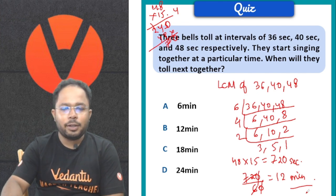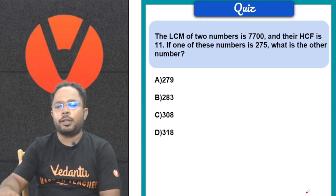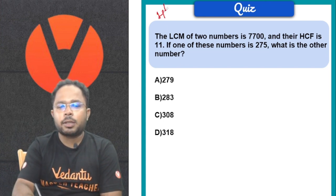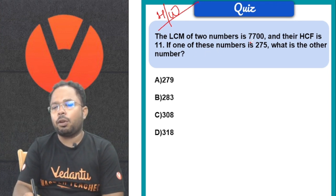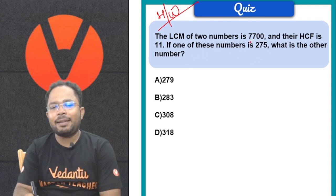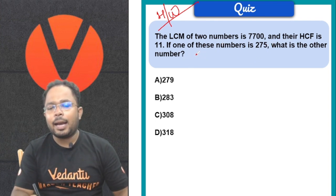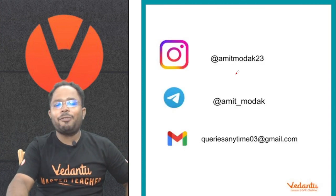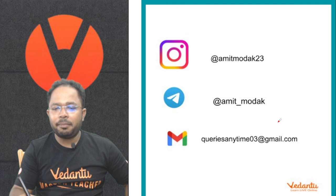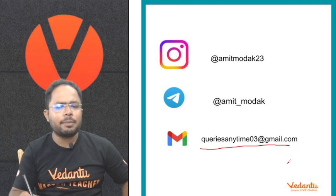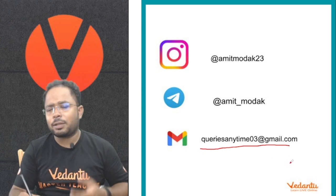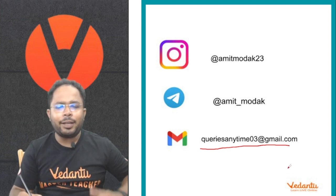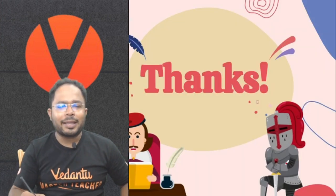I hope you've got this part. Let's move on to the next question, and this is going to be our homework. Tell me in the comment box what answer you get: what is the other number if the LCM of two numbers and HCF is given, and one of the numbers is 275? You can follow me on Instagram and Telegram, and post your queries at queriesanytime03@gmail.com. You can also ask for any topic you want more questions on. See you in the next video. Thank you, bye-bye.